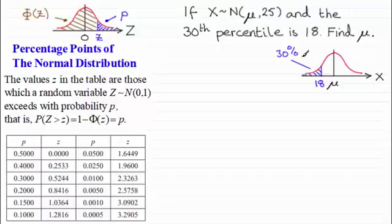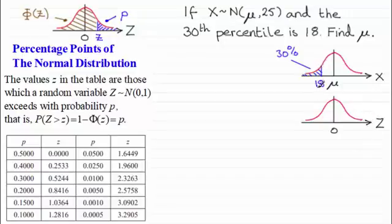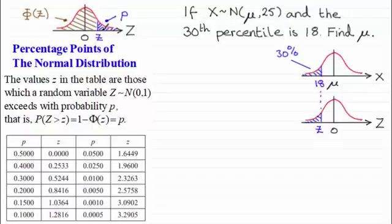Now, as covered in the previous video, we should turn to the standardized normal distribution Z, which is distributed normally with a mean of 0 and variance of 1, so the standard deviation is 1. We need to find the observed Z value that corresponds to the observed value of 18. The problem is that this Z value is on the left of 0, and our tables only give us observed values to the right of 0 — we need the area to the right of Z, representing the probability P.